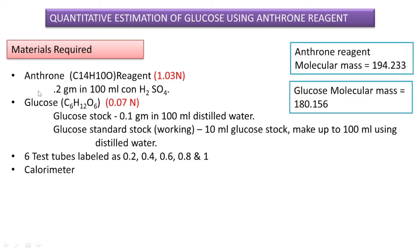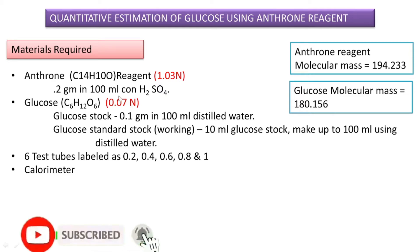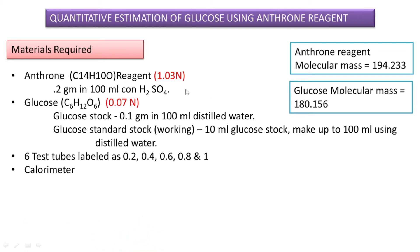First we need anthrone reagent of 1.03 normality. The method of preparation is mentioned here: we need to mix 0.2 gram anthrone dissolved in 100 ml of concentrated sulfuric acid. How to prepare a solution of a particular normality is mentioned in another video, and its link will be put in the description box.